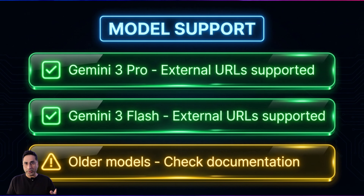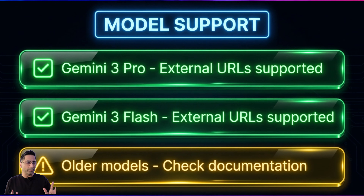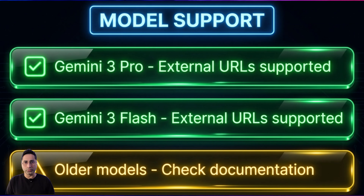External URLs are supported by Gemini 3 models, both Pro and Flash. I'm not sure if they're supported by older models, so please do check on that as well. I'm hoping this update is very valuable for anyone building AI workflows where there's a lot of document processing happening. Please let me know in the comments if this update directly impacts and helps you — I'm curious to understand the use cases. If you found it valuable, hit the like button, and if you're new to the channel, subscribe for more updates. Thank you for watching — I'll see you in the next one.